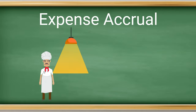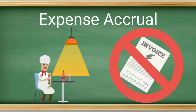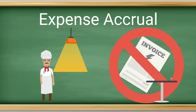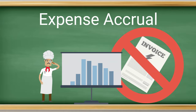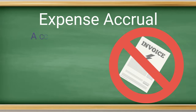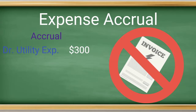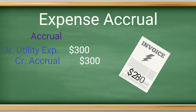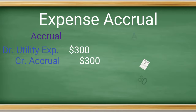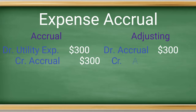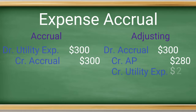Now back to our electricity accrual example, which represents an expense that you have benefited from, but you may not have received your bill by the end of the month. Every month there are accruals made for recurring and known expenses. In this example, we know we need to accrue for our electricity bill. We have averaged $300 a month and believe this to be our best estimate. Therefore, our adjusting entry is a debit to utility expense for $300 and a credit to utility accrual, an accrual liability. Let's go one step further — let's say next month the bill comes in and it's $280. Your adjusting entry for this is to debit the accrual account for $300 and a credit to your payable account for $280. The difference of $20 will be booked through a reduction of expense by crediting utility expense.